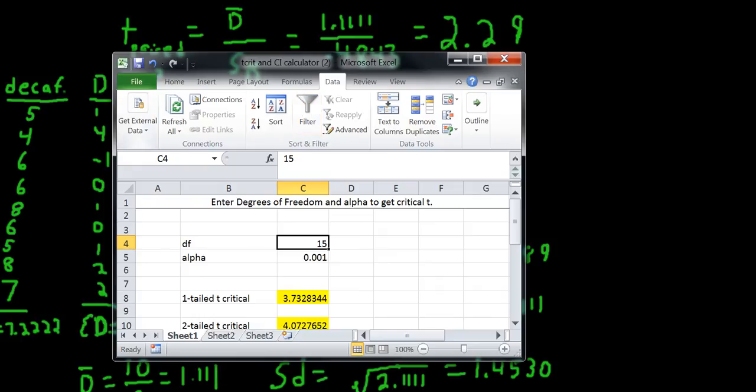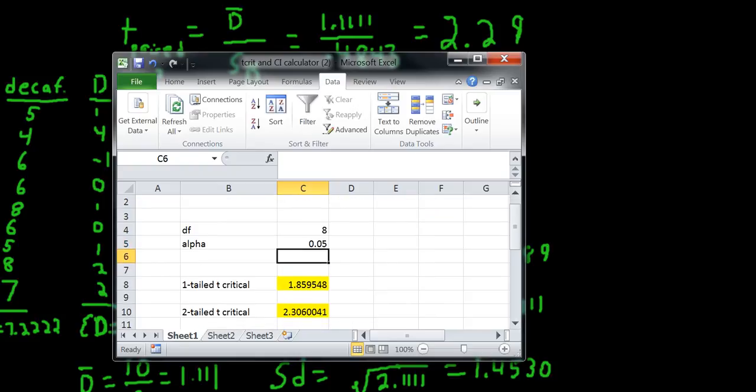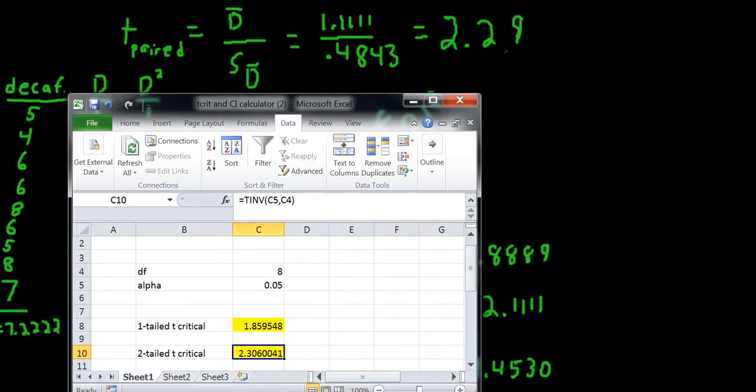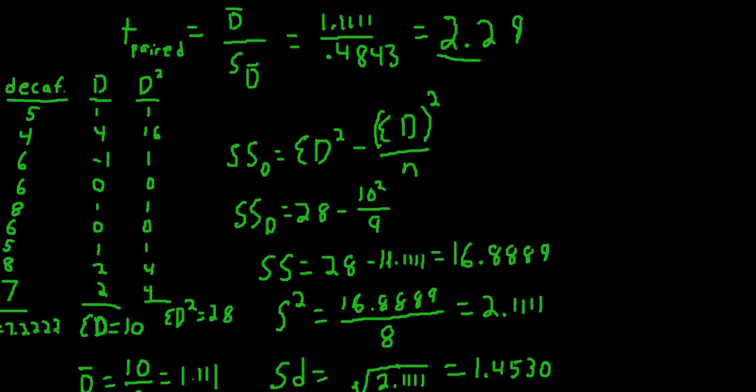Degrees of freedom here will be n minus 1, so degrees of freedom are 8. We'll do alpha 0.05 and two-tailed. If we're doing two-tailed, we need to get to 2.30. This is one of those situations where we are incredibly close. We have 2.29. T critical is 2.30.